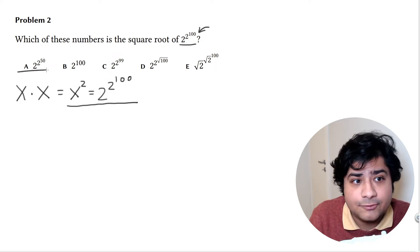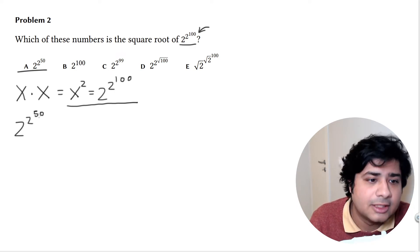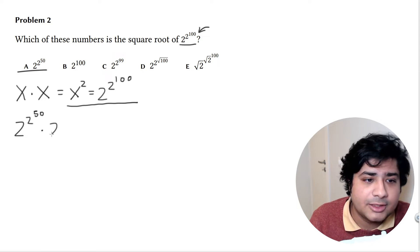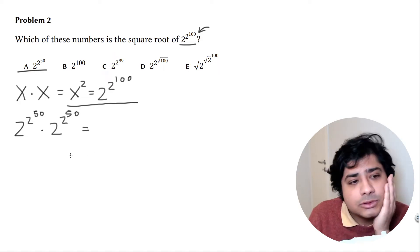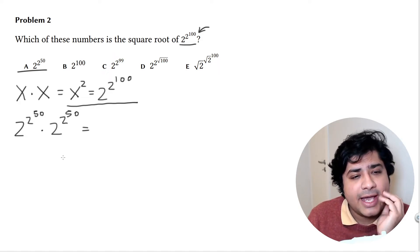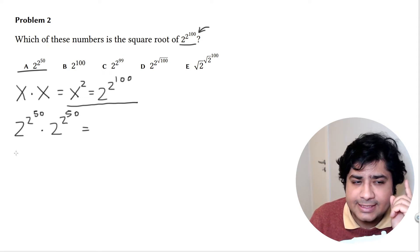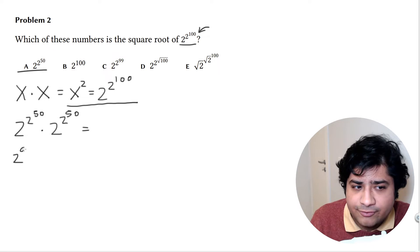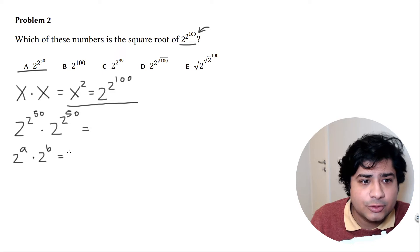I'm going to pick the first number: 2 to the power of 2 to the power of 50, multiplied by 2 to the power of 2 to the power of 50. Now I'll use the exponent rule that says 2 to the power of a, times 2 to the power of b, equals 2 to the power of a plus b.